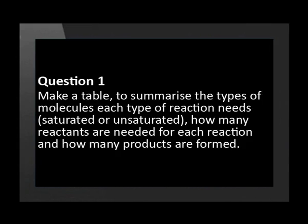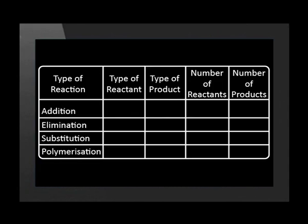This task relates to these sections in organic reactions. Here is your first question. Make a table to summarize the types of molecules each type of reaction needs, that is saturated or unsaturated, how many reactants are needed for each reaction, and how many products are formed. Use this table as an example. Remember to keep this table because it will help you answer questions later on.